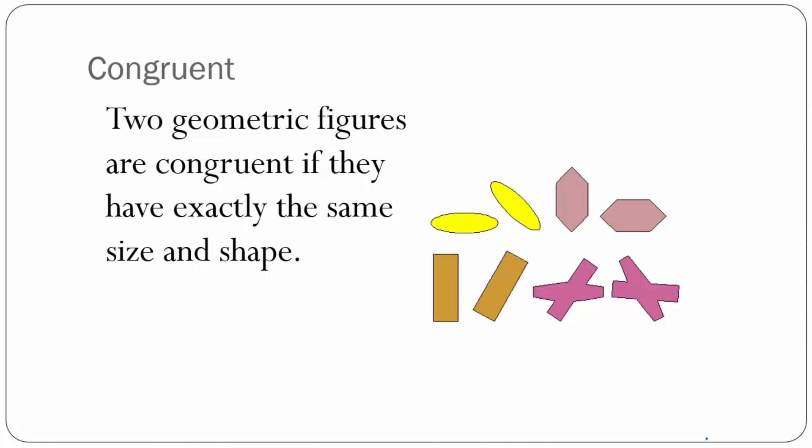Vocabulary. Congruent: two geometric figures are congruent if they have exactly the same size and shape.